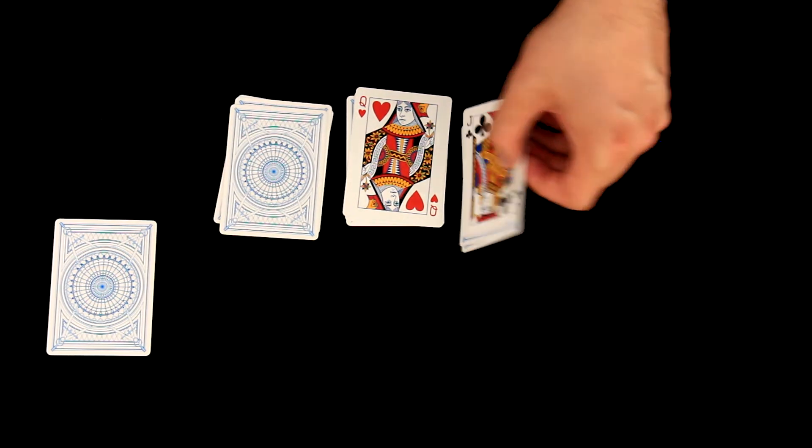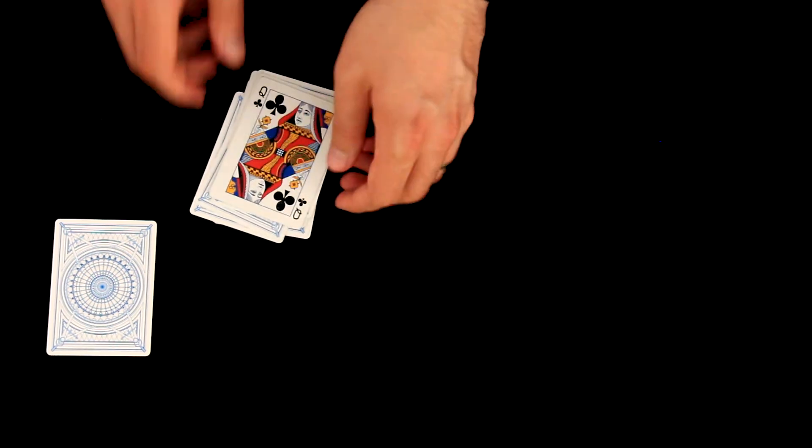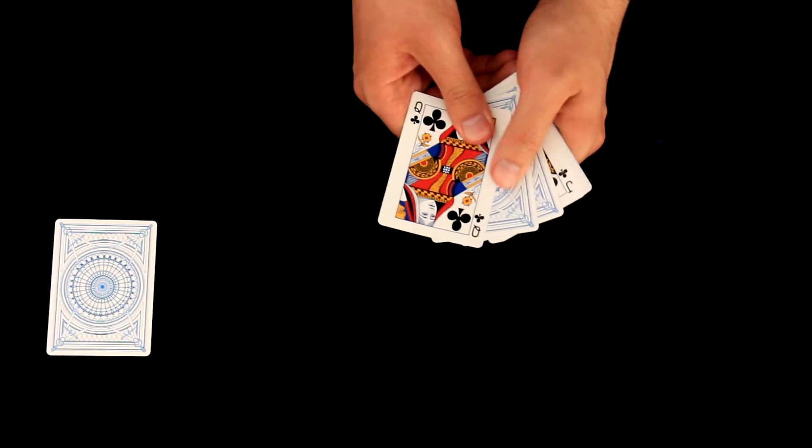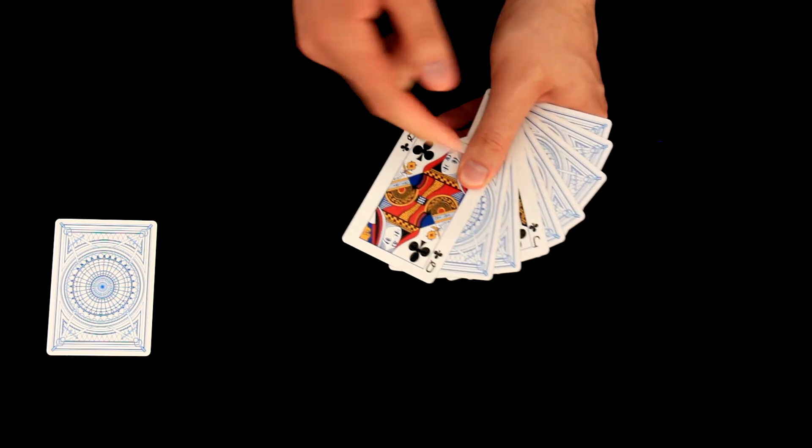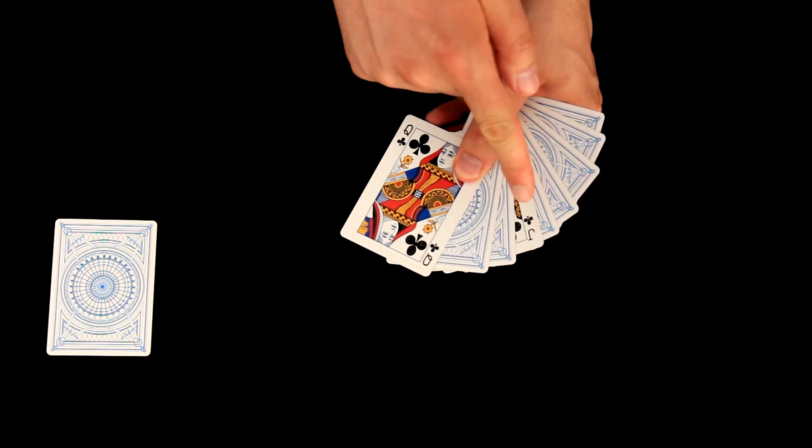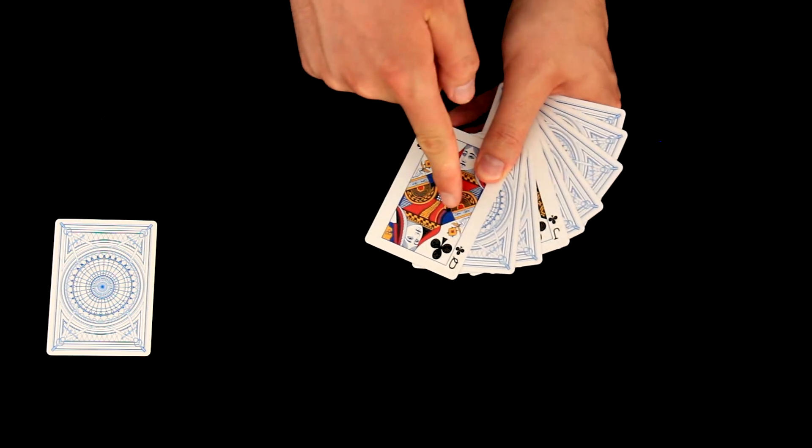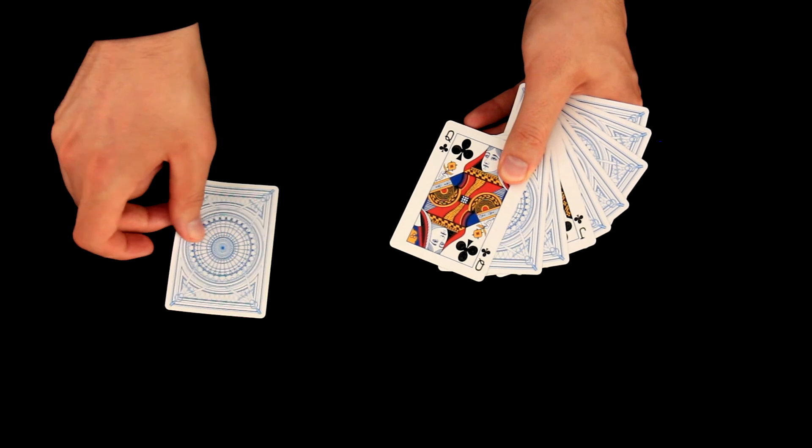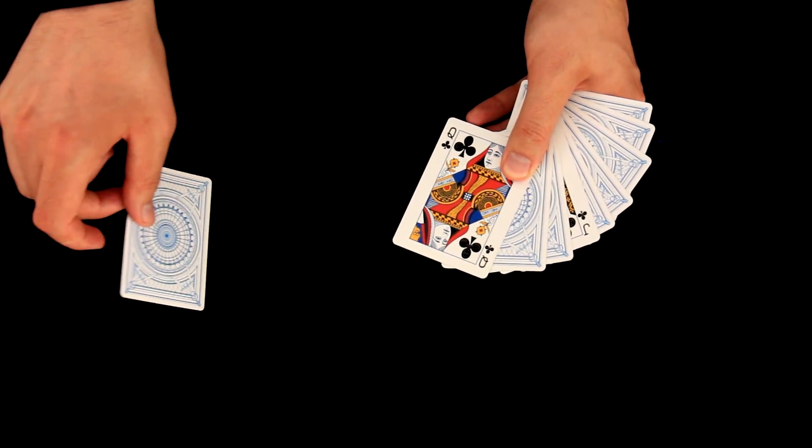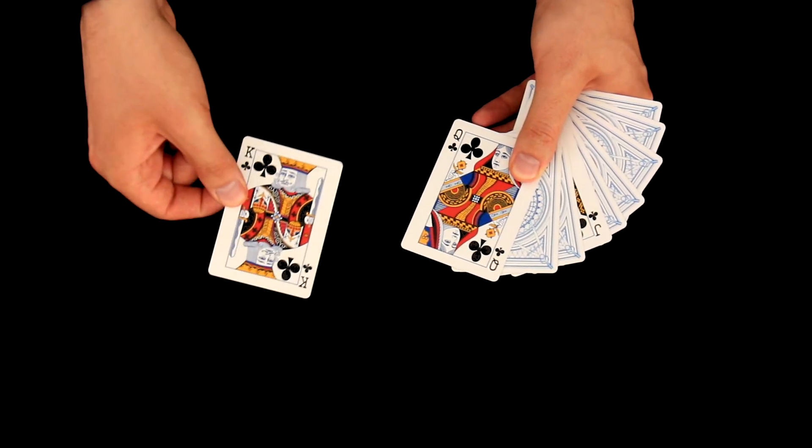Now we will continue and the result will be always the same. Here will be two cards of same suit. In this case jack of clubs and queen of clubs. And the card on table must be the only card that is missing, in this case king of clubs.